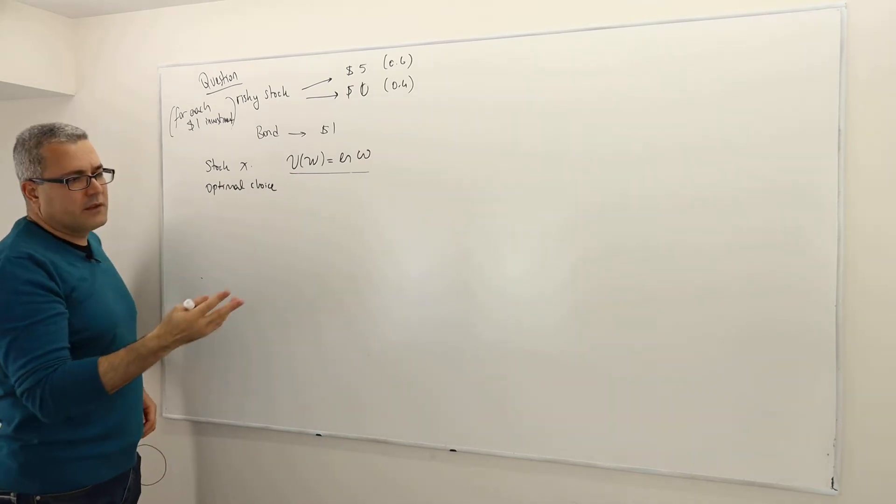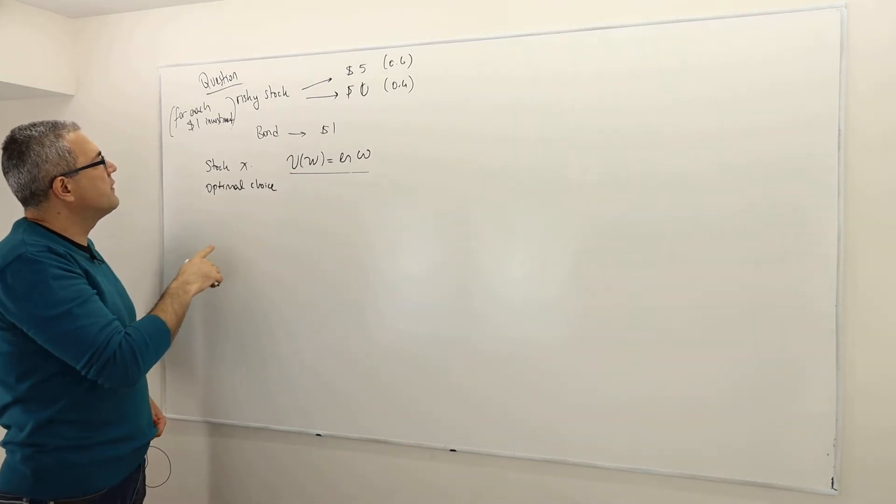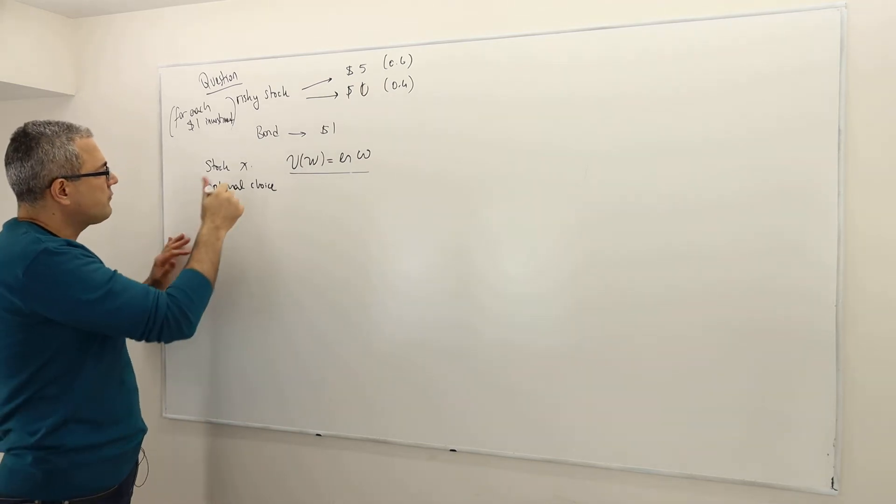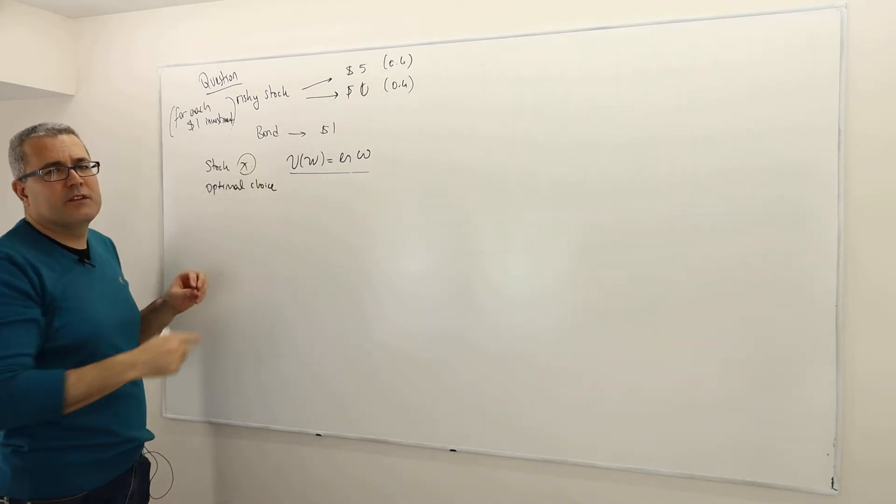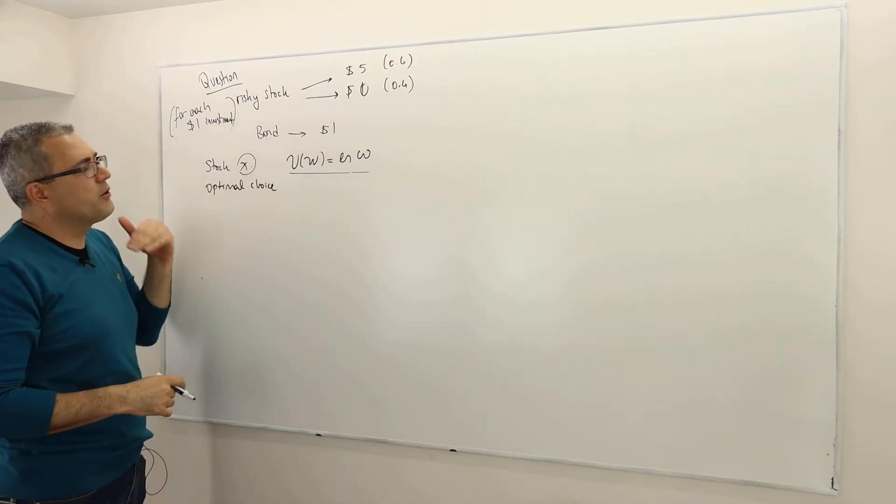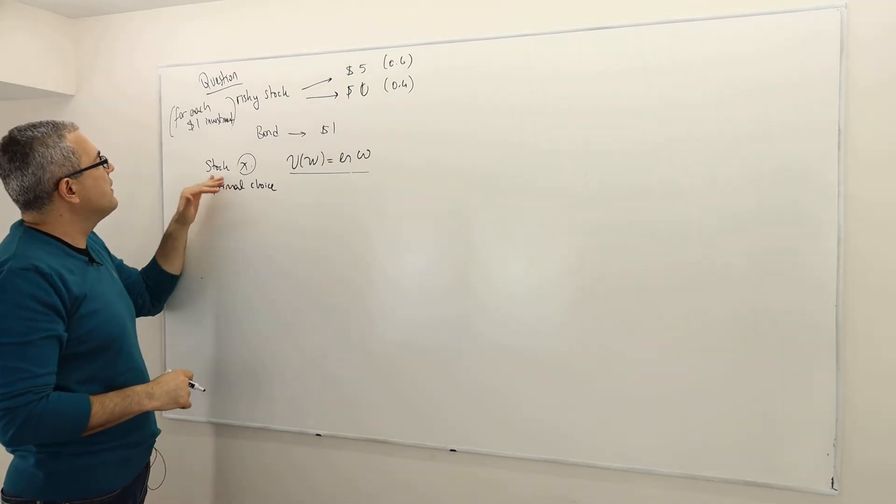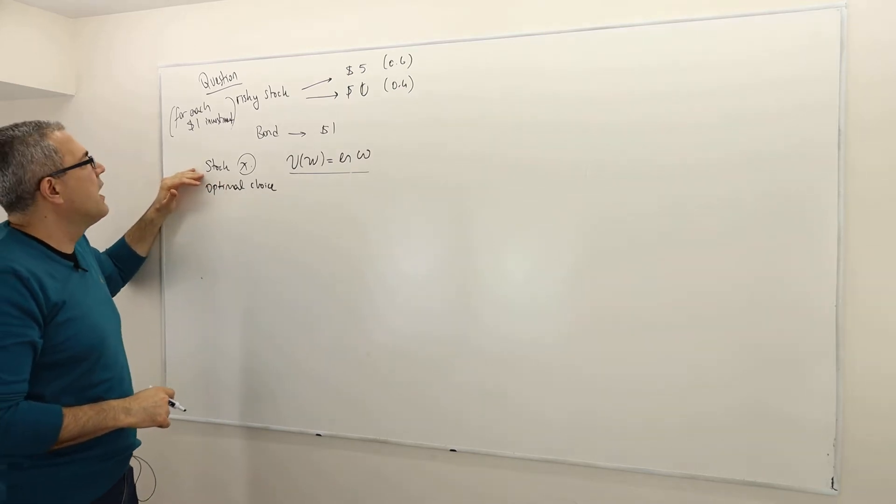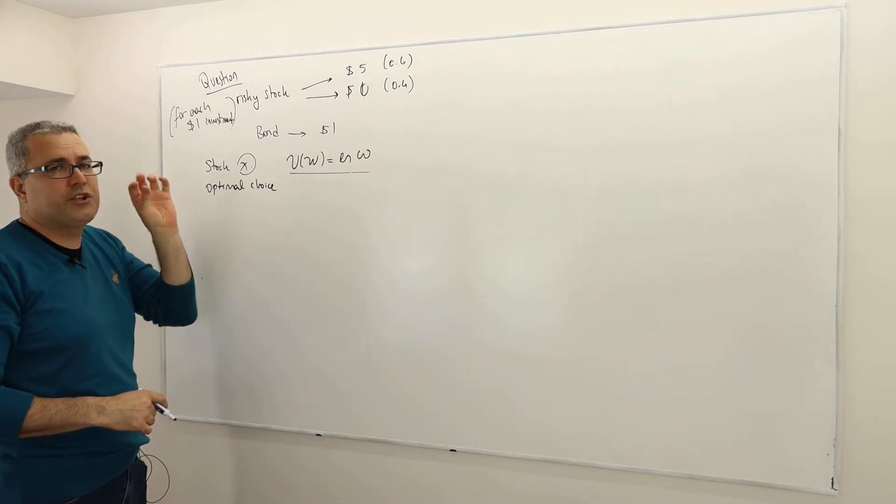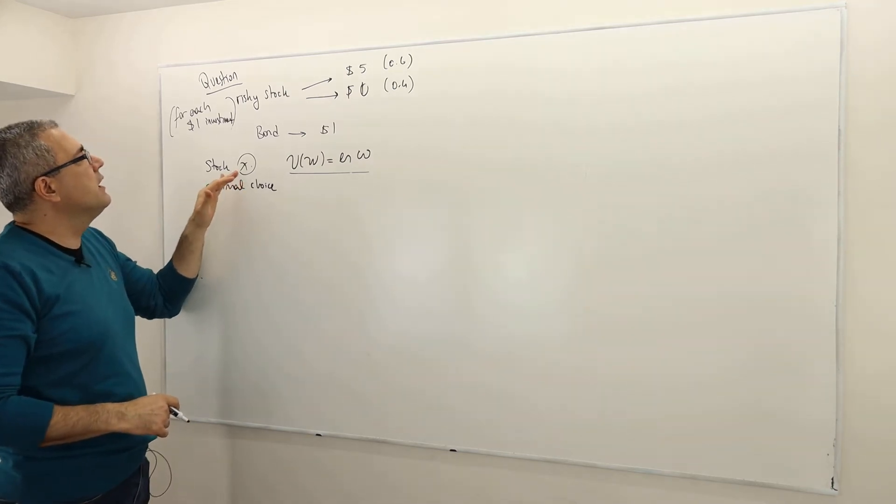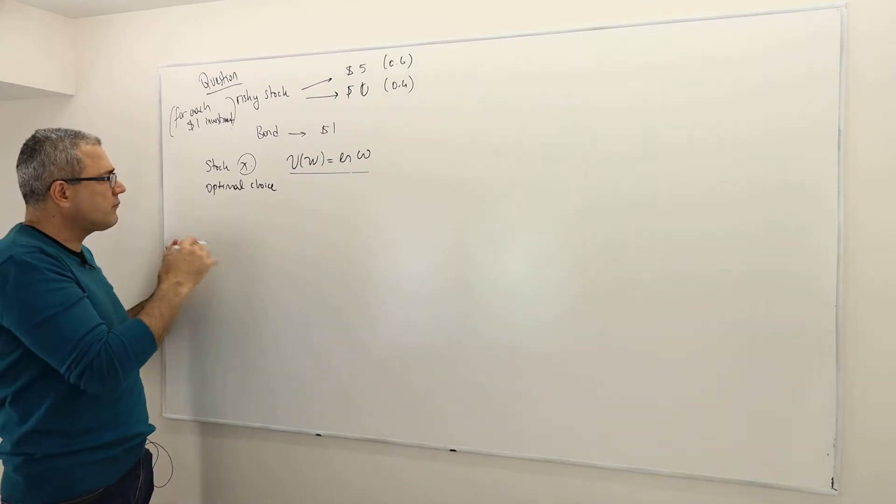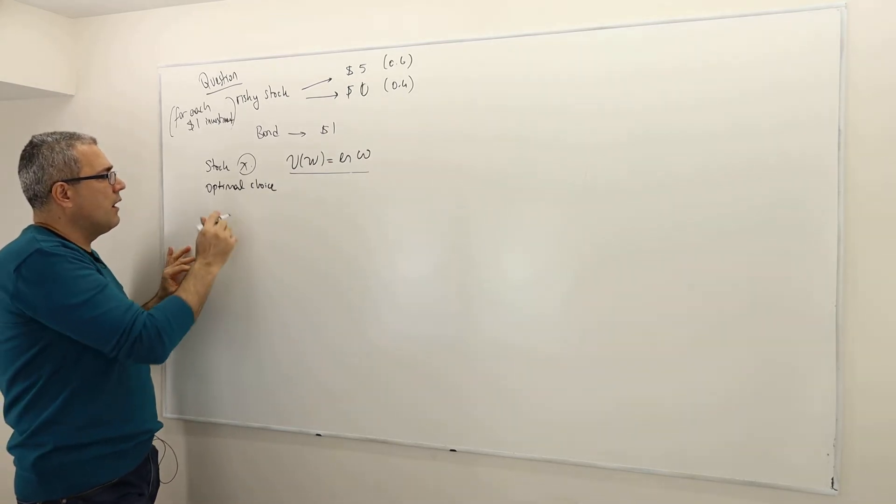Here, this decision maker is doing the following: he's distributing the risk with X percent, so X is a number between 0 and 1. With X percent of his wealth, he is investing in risky stocks. Therefore, with 1 minus X percent, or share of his wealth, he makes the investment in the bond market.